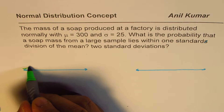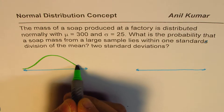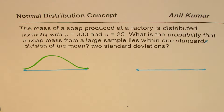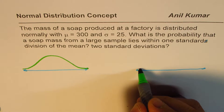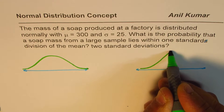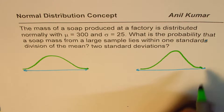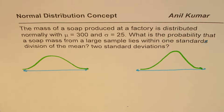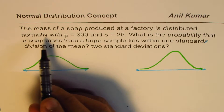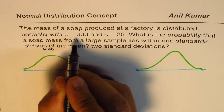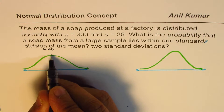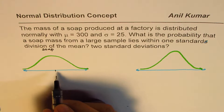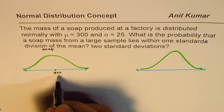Let me sketch two graphs. The first graph is for the soap, and we'll translate this into our Z-score graph, which is the standardized normal graph. We're given that the mean is 300, so this is always the maximum point. Median and mean for normal distribution are always the same — in this case, it is 300.